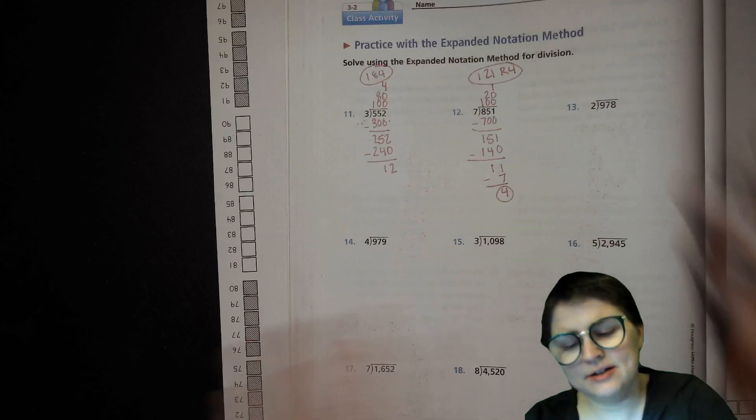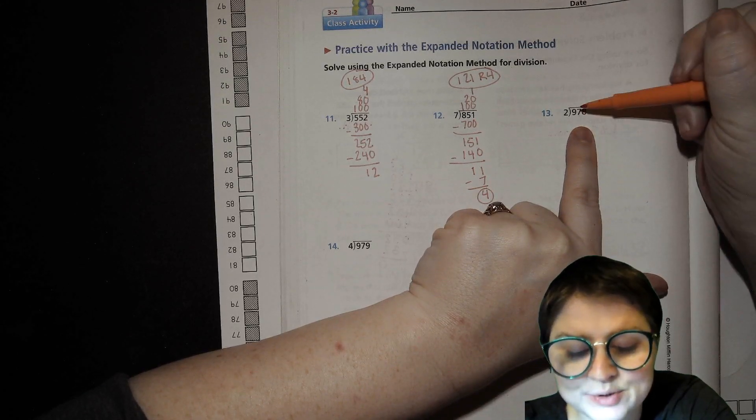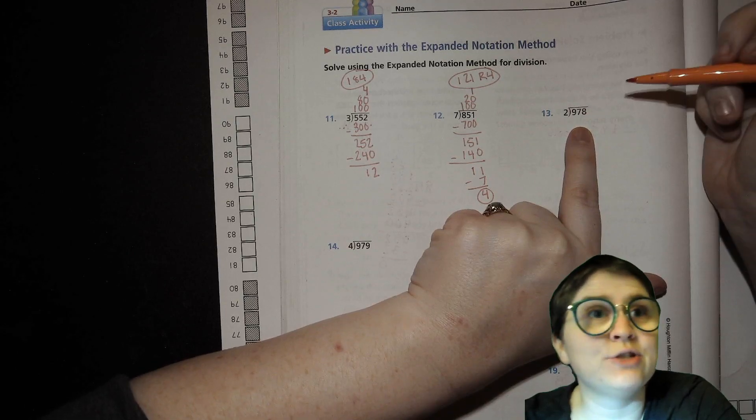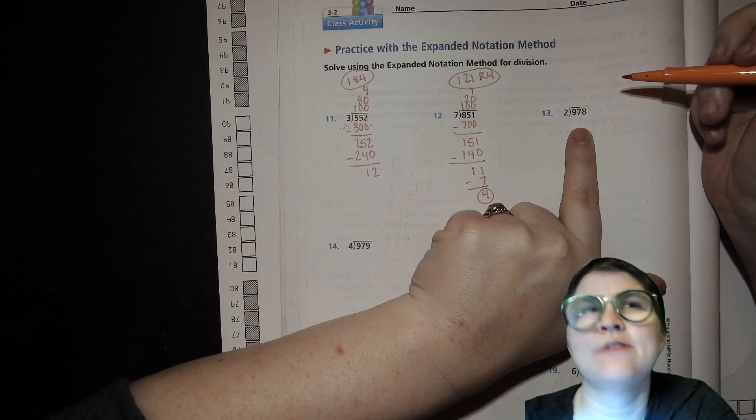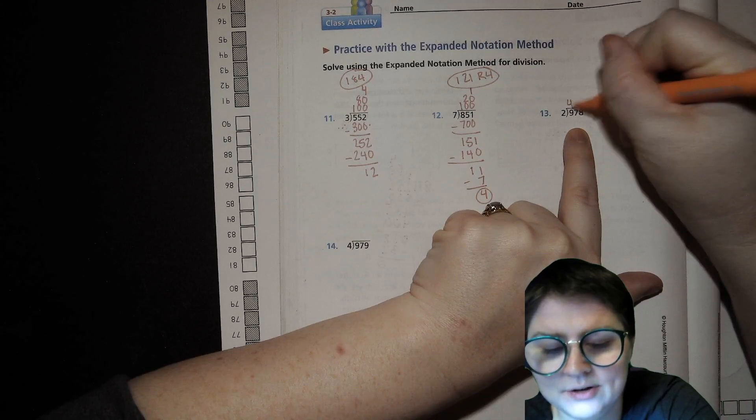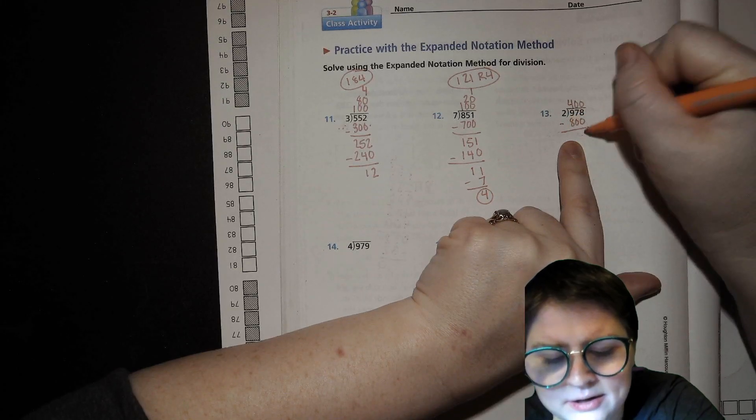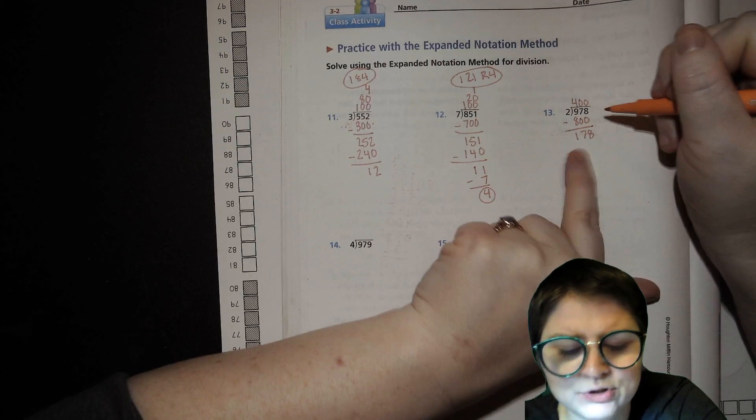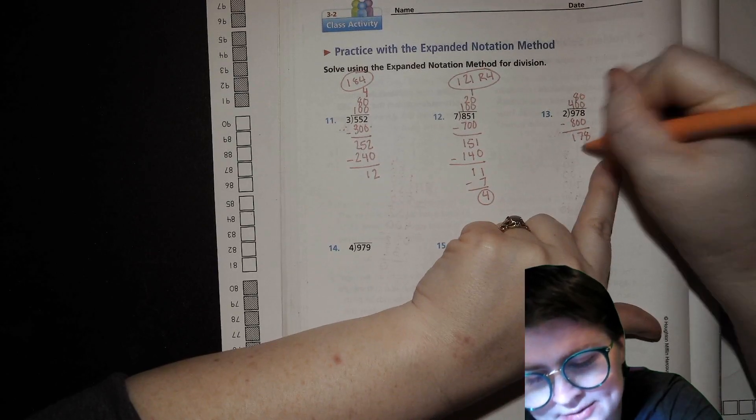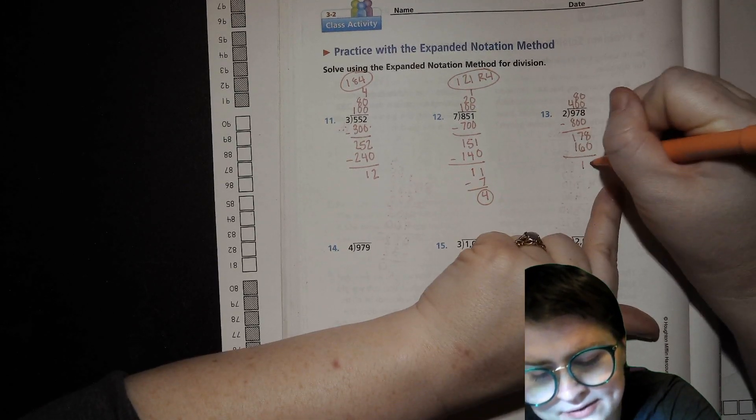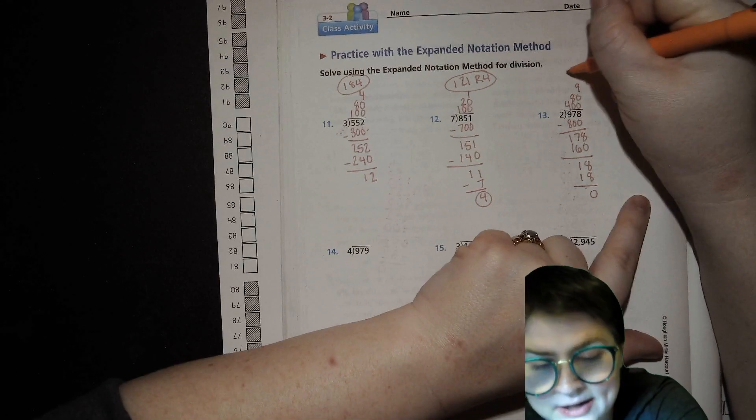Then over here, this next one. 2 goes into 978 how many times? How many hundreds do you multiply 2 by to get close to, but not over 900? I'm thinking 400 will get us 800. Let's do that. 400. I guess 500 will get us 1,000. That's too many. 800. 8, 7, 1. Now, 2 into 17. That'll be... I'm going to get 16 with 8 tens. 8 tens. 18, 10. 18 left. 9. 18, and 10. No remainder in this one. 489.